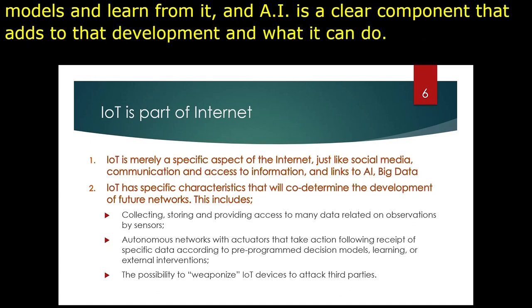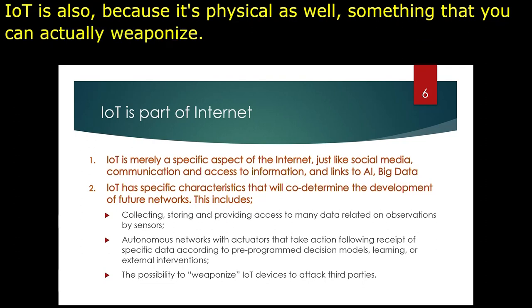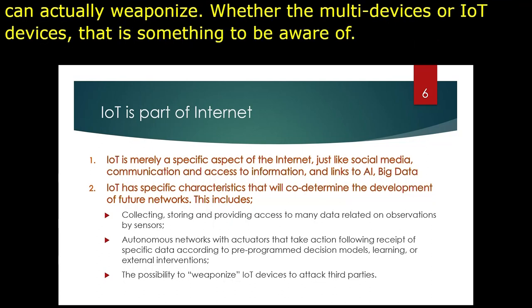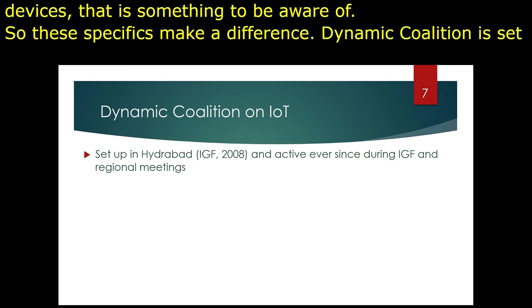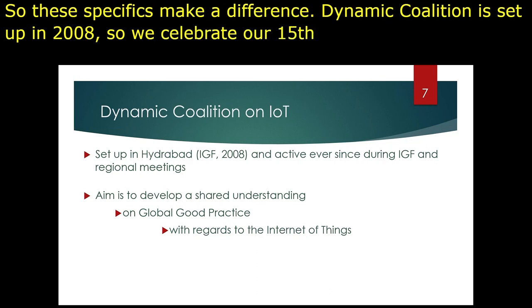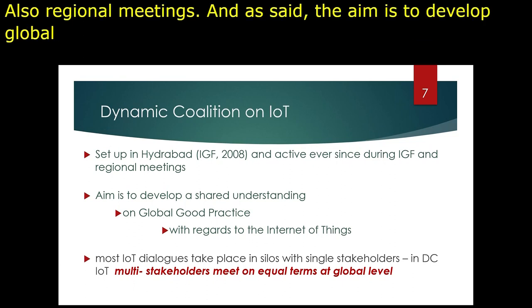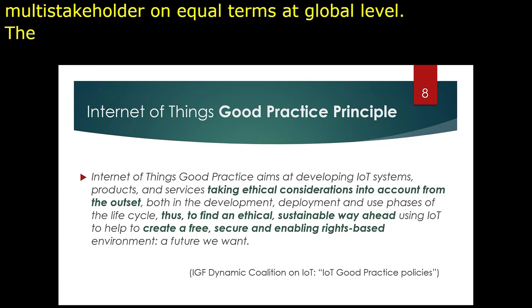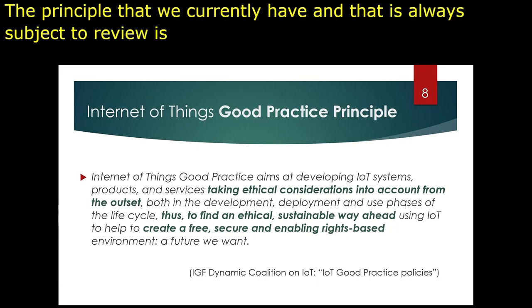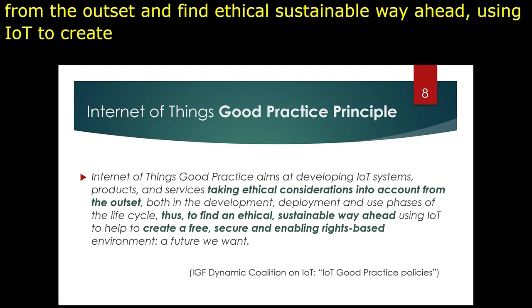IoT is also, because it's physical as well, something that you can actually weaponize — whether it's domestic devices or other IoT devices used to attack third parties — and that is something to be aware of. The Dynamic Coalition was set up in 2008, so we celebrate our 15th year, and it's been active ever since, including regional meetings. The aim is to develop global good practice, and the dialogue is about meeting multi-stakeholders on equal terms at global level. The principle is taking ethical considerations into account from the outset, and finding an ethical, sustainable way ahead using IoT to create a free, secure, and enabling rights-based environment — the future we want.